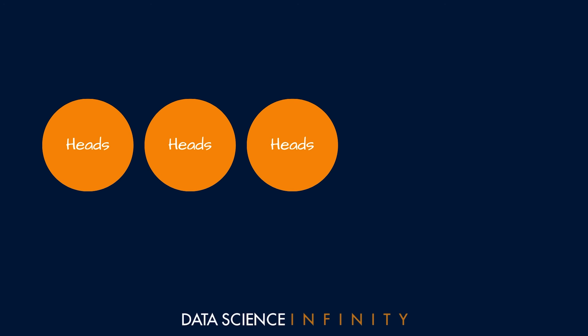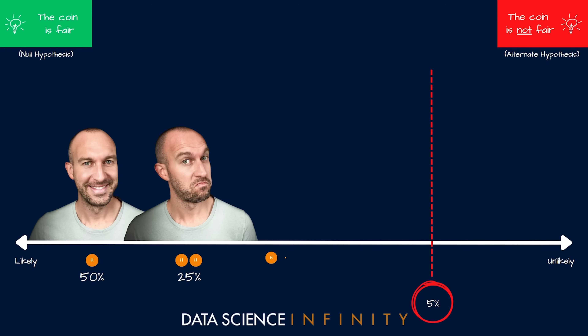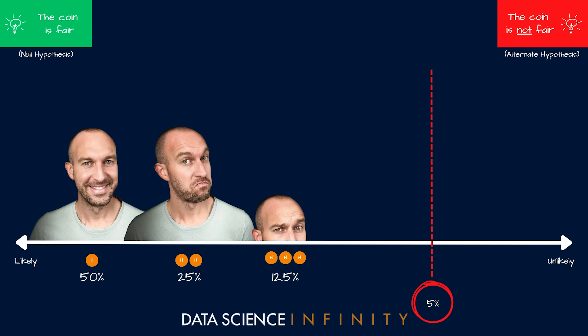Then Pete flips another head — three in a row. If the coin was fair, there's still a random chance of twelve and a half percent, or one in eight, that this would happen. Back to our spectrum, I'm still not ready to accuse Honest Pete of trickery. A 12.5 percent chance is still higher than that five percent threshold, but perhaps I'm a little intrigued.